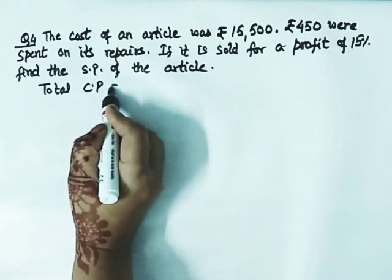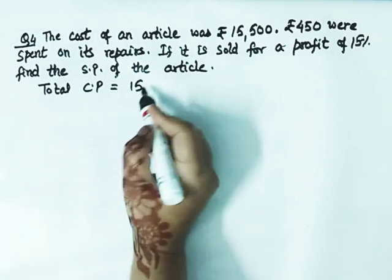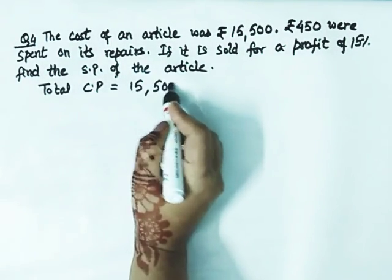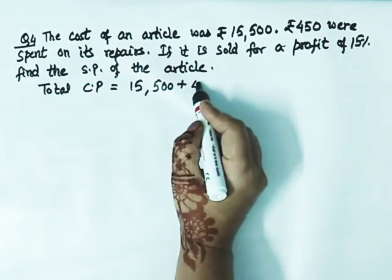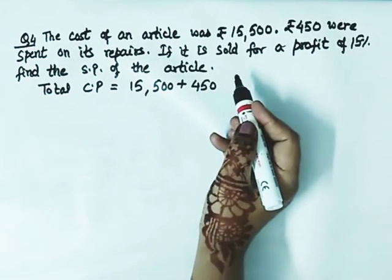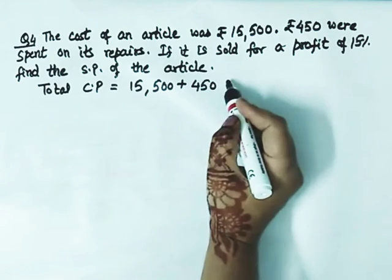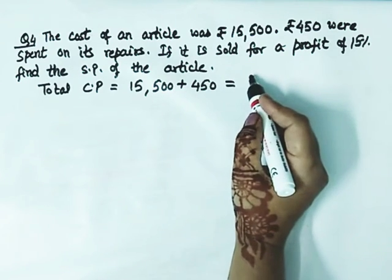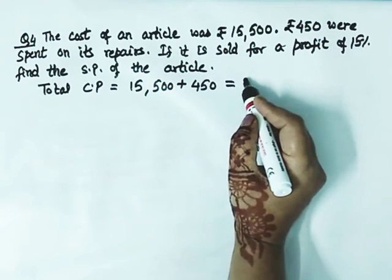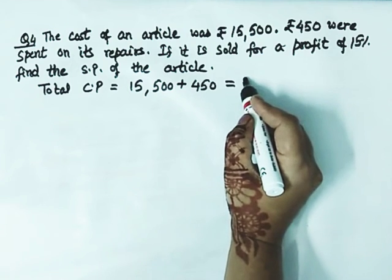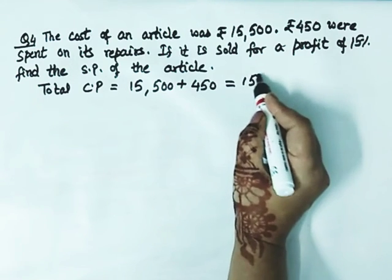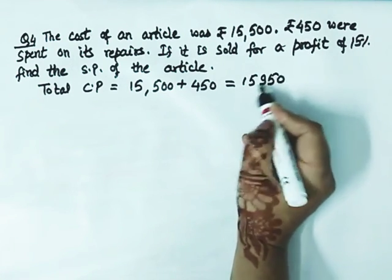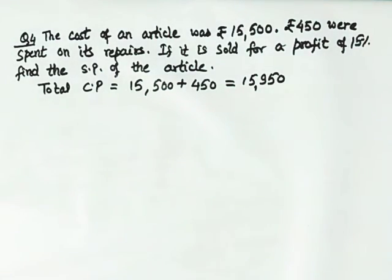So what will be the total CP? Total CP is the actual cost plus the extra expenditure. That is the total CP. So adding these up, what net CP do we get? It will be 15,950.